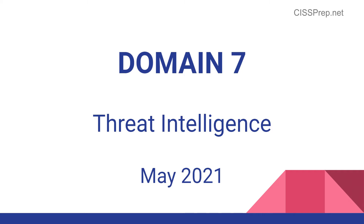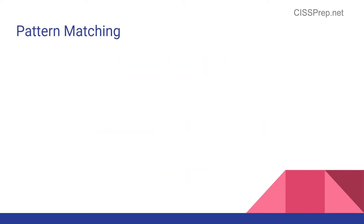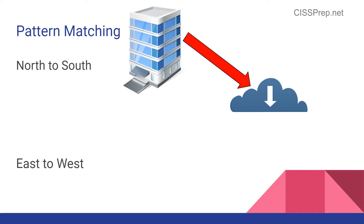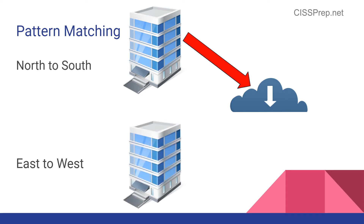A few additional log management terms popped up in Domain 7 that you'll need to be aware of. Pattern matching is the process of looking at signature behavior of data movement and activity throughout an organization. North to south refers to the movement of data outside your organization, so basically communication on the internet. East to west refers to data patterns that move inside the organization, so basically over the internal network connections.